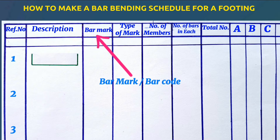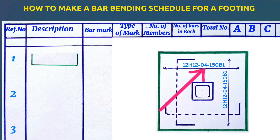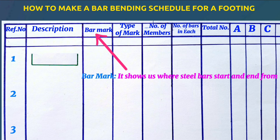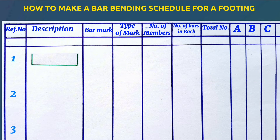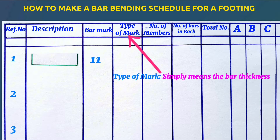This is the bar mark, which is the same as the bar code. If you come across this in your structural drawing, it simply means the bar mark, which is the same as the bar code. These bar marks or bar codes show us where steel bars start and end from. The bar mark can be 11, it can be 20, it can be 08 or any other number. The type of mark simply means the bar thickness.